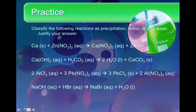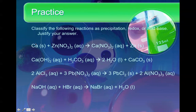Now I want you to look at these four reactions and classify them as precipitation, redox, or acid-base. Pause this, work it out, and then hit play when you're ready. On the first one, I see pure calcium and zinc nitrate on the reactant side, and calcium nitrate and pure zinc on the product side. Pure elements have a charge of zero; zinc in a compound is plus two; calcium in a compound is plus two. Calcium went from zero to plus two; zinc went from plus two down to zero. So this is an oxidation-reduction, or redox, reaction.